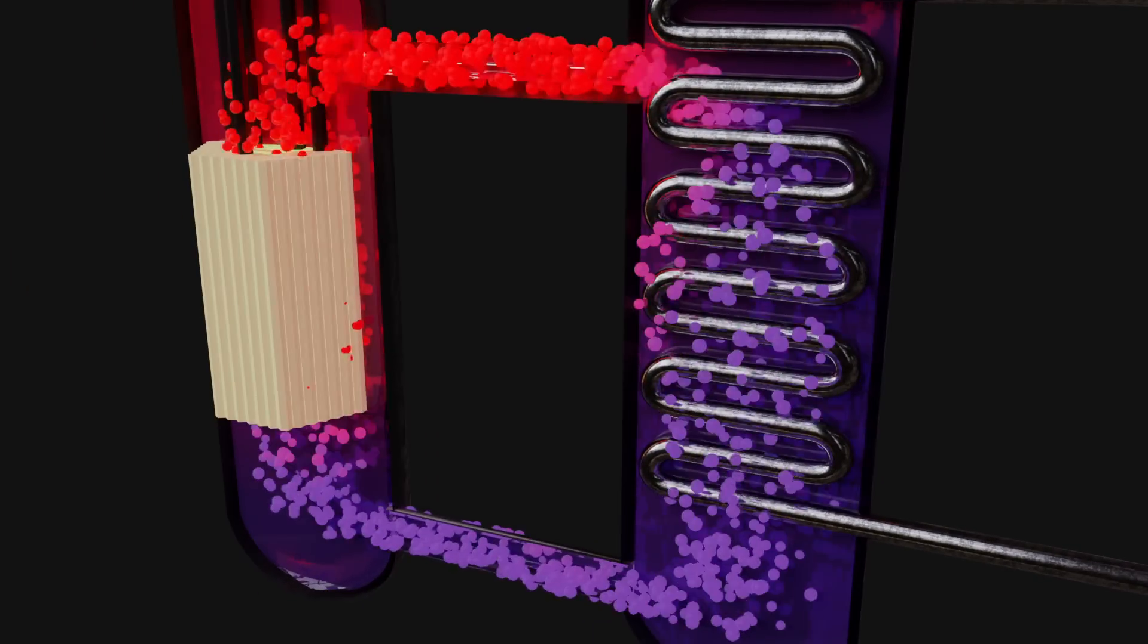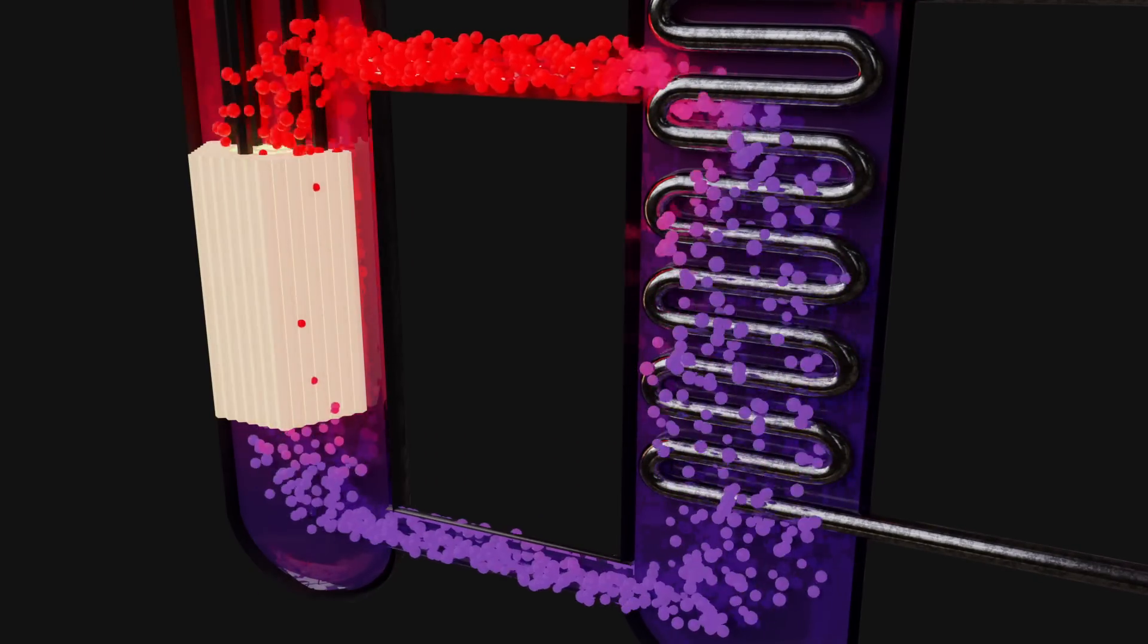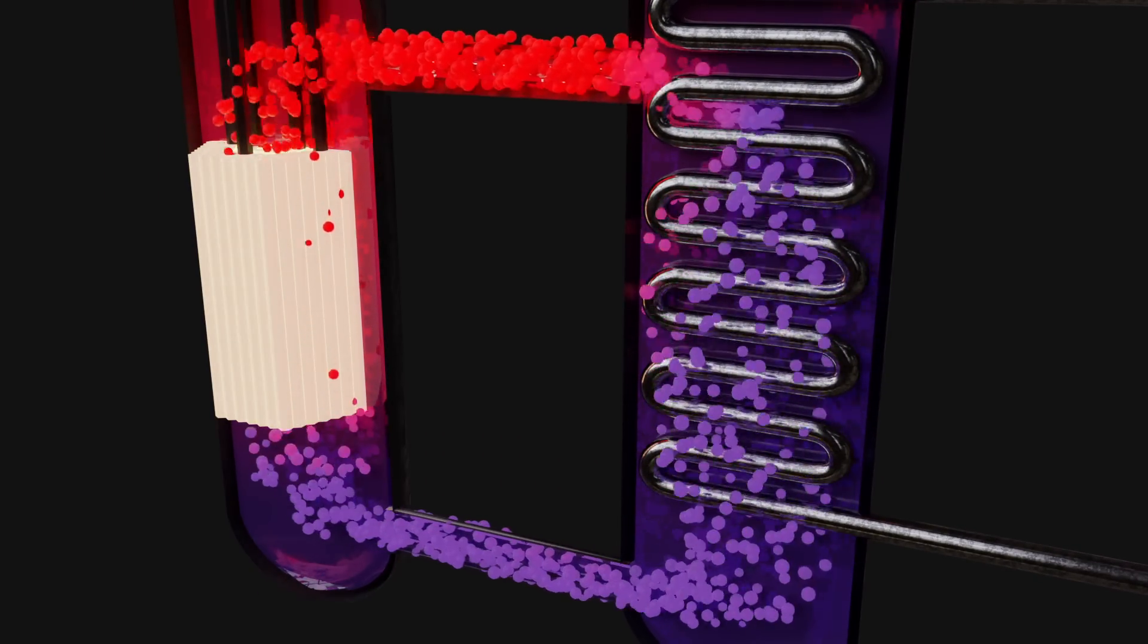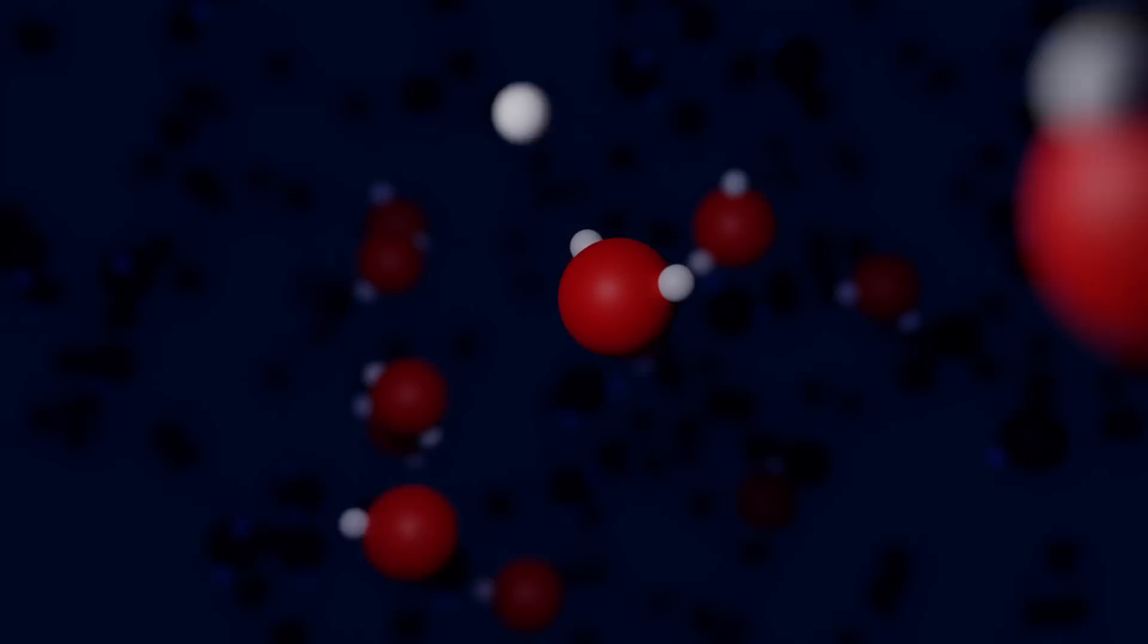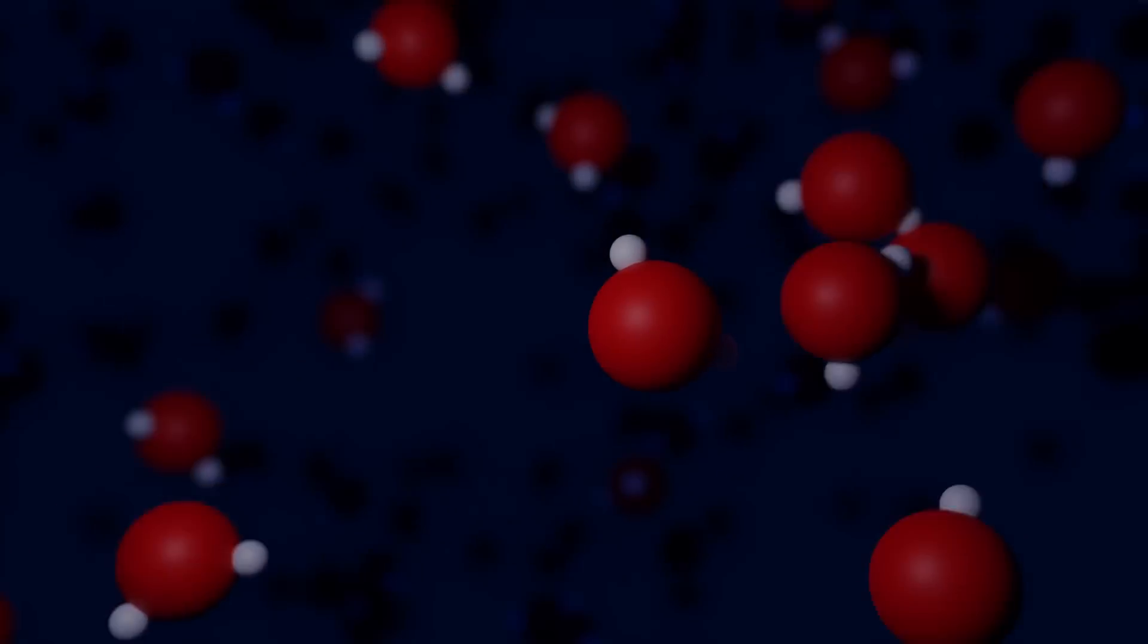Since thermal reactors need slow neutrons, they can use mobile phases that readily interact with and slow down neutrons. Water excels at this, and as such is used in the majority of thermal reactors.